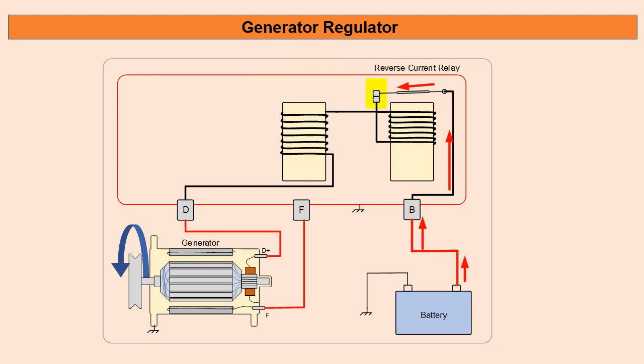As our generator starts to slow down at idle or when the engine turns off, what happens is the battery voltage becomes higher than the generator and so the current starts to reverse. It goes backwards from the battery to the generator.